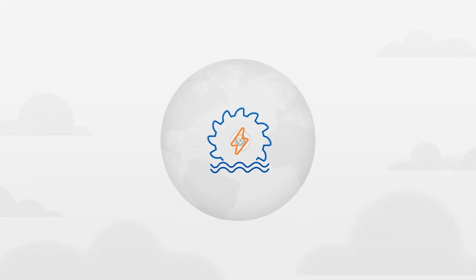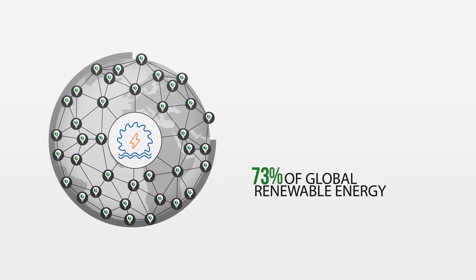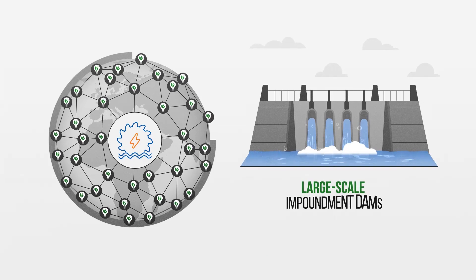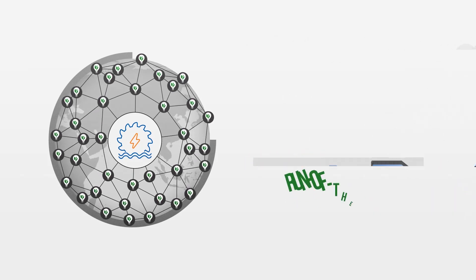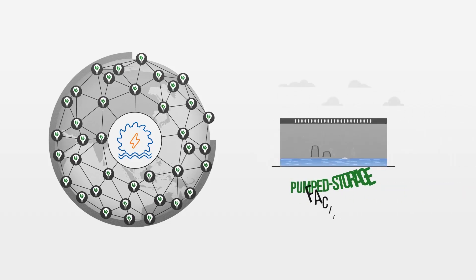Today, hydroelectricity produces 73% of global renewable energy. There are three main types of hydropower facilities: large-scale impoundment dams, run-of-the-river dams, and pumped storage facilities.